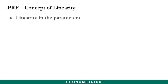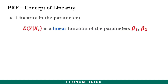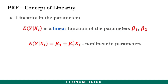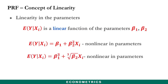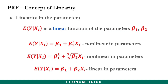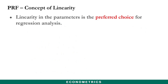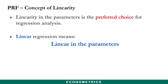The next concept is linearity in the parameters, which means that the expected value of y given the values of x is a linear function of the parameters in the model. For example, a model where beta 2 is raised to the power of 2 is nonlinear in parameters. Similarly, a model where beta 1 is raised to the power of 3 and the cube root of beta 2 is taken is also nonlinear in parameters. A model is linear in the parameters when beta 1 and beta 2 are each raised to the power of 1. Linearity in the parameters is the preferred choice for regression analysis — linear regression simply means linear in the parameters, although it may or may not be linear in the independent variables.